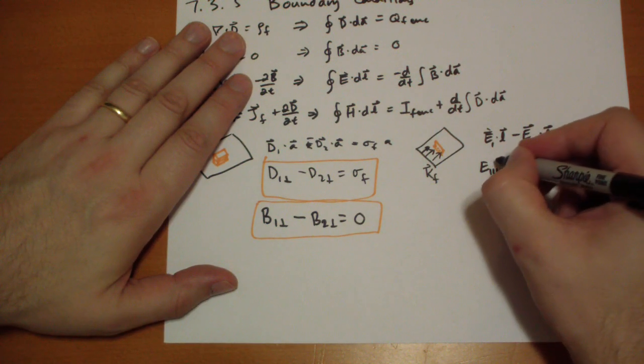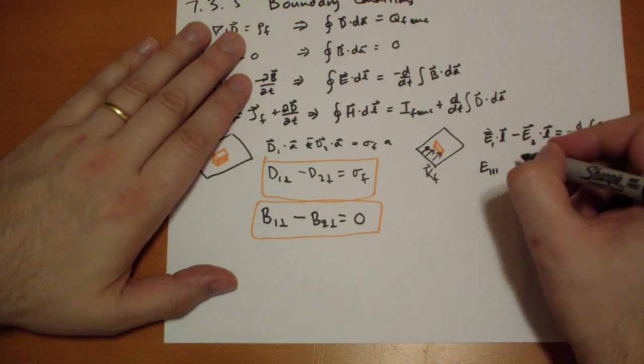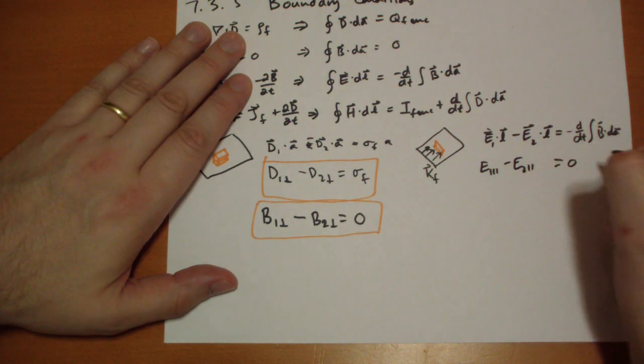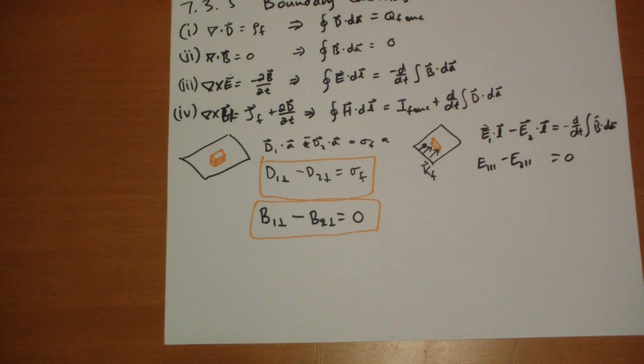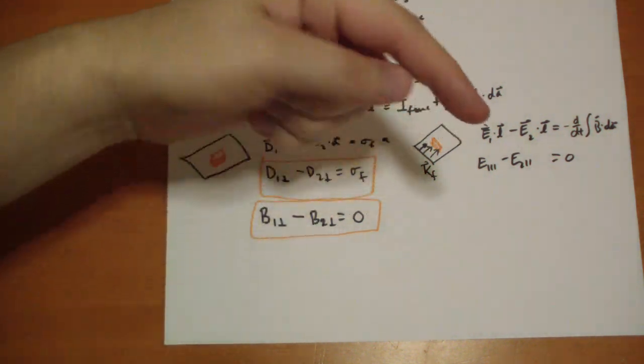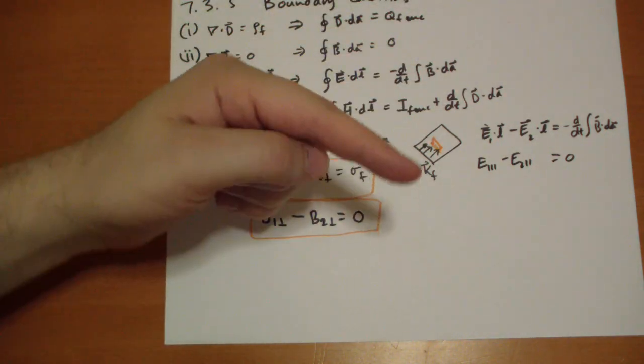So the parallel component of the top electric field minus the parallel component of the bottom electric field equals zero. The electric field passing parallel to a surface doesn't change as you cross a surface current.